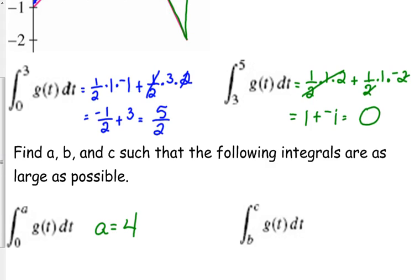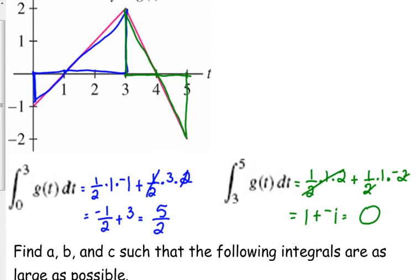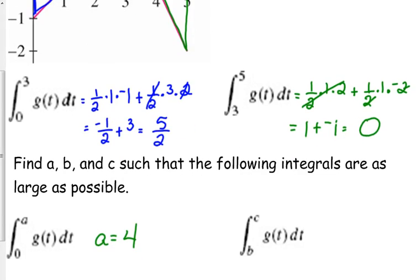Now, the next one, we get to pick both numbers, where we start and where we end. So, where should we start and end so that we accumulate the most area? 1 to 4. We just want positive area. We don't want to take anything away from it. So, just consider the positive part. B is 1. C is 4.